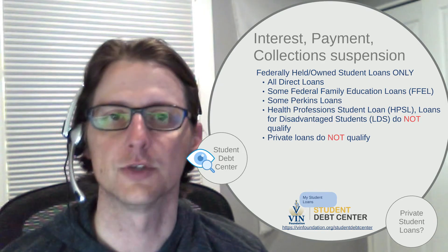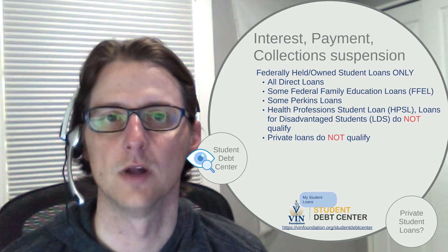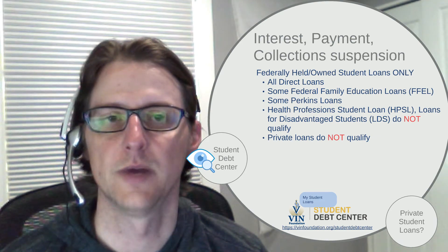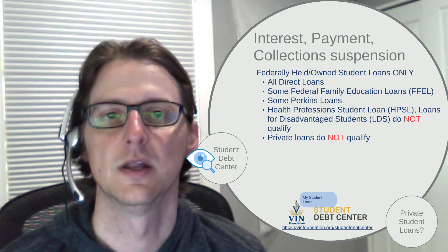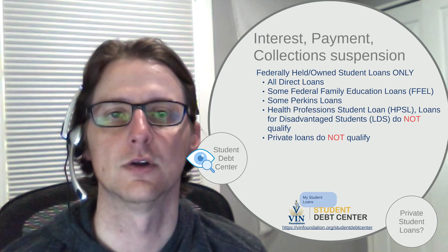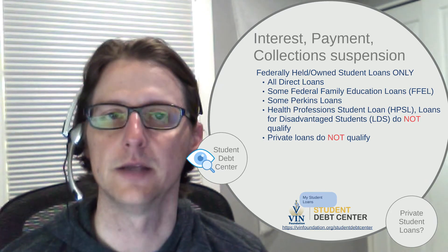There are some other federally held or federally owned loans, but they can have various statuses in terms of whether or not they qualify. Some federal family education loans, some Perkins loans — it really depends on who owns those. If the Department of Education owns them, then they qualify. If they don't, then they will not qualify. The same applies to health profession student loans and loans for disadvantaged students. These are a type of federal student loan, but they're usually owned by the state or the school that you received those loans from, so they are not automatically eligible.